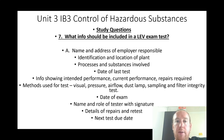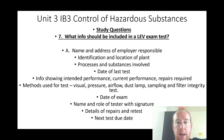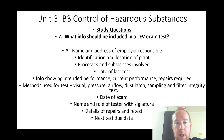What should be included in an LEV examination and test? Name and address of the employer, identification and location of plant, processes and substances involved, date of last test, information showing intended performance and current performance, repairs required, methods used for testing (visual, pressure, air flow, dust lamp, sampling, filter integrity test), date of examination, name and role of tester with signature, date of repairs and retest, and next test due date.